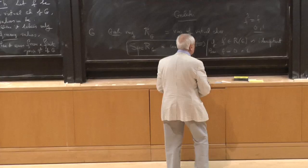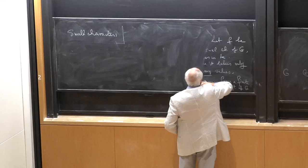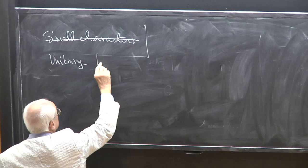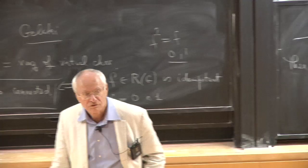Now I can go to something a bit more mysterious: the unitary trick. The unitary trick was used by Hermann Weyl to explain how you can prove things for complex Lie groups using compact groups. I'm going to do something similar.